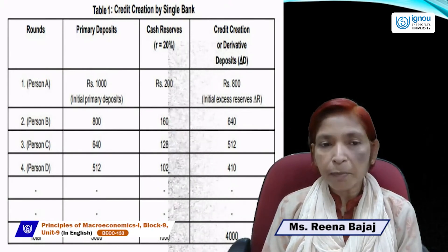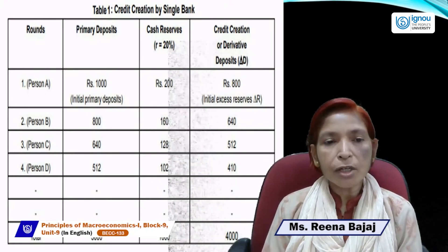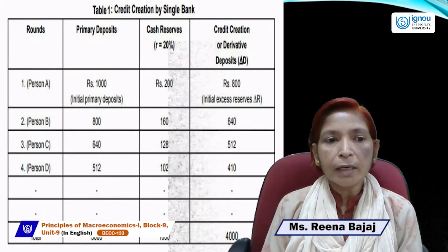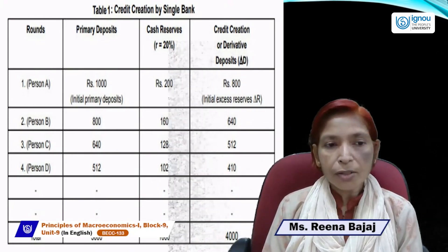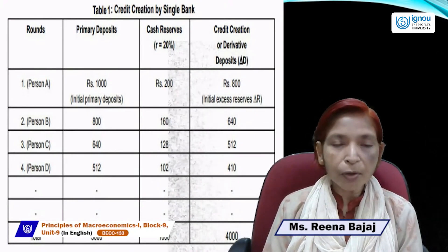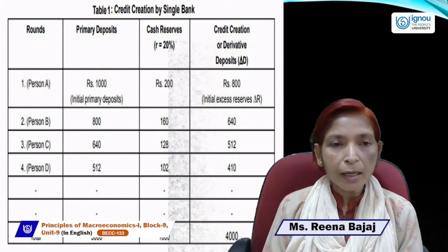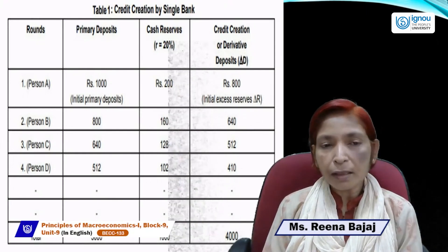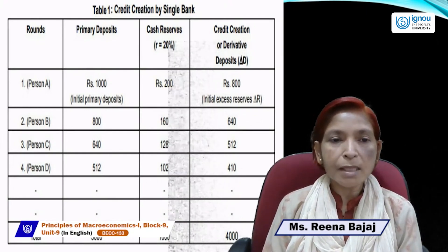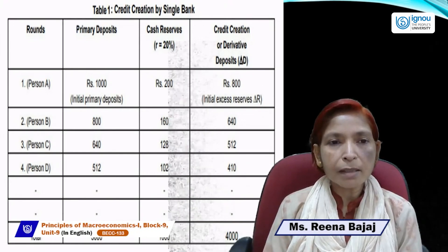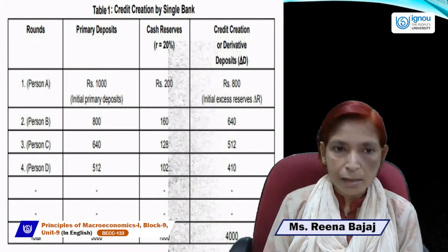If CRR is 10%, credit creation would be 10,000 from the same initial deposit. Credit creation depends on CRR: if CRR increases, credit creation decreases; if CRR decreases, credit creation increases.